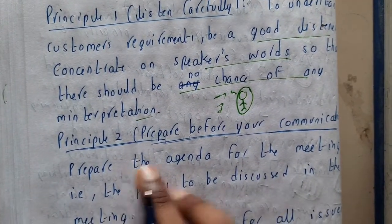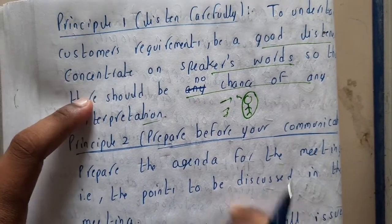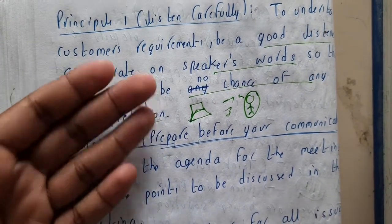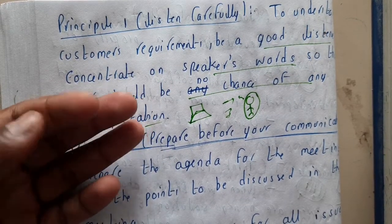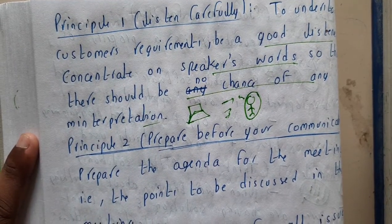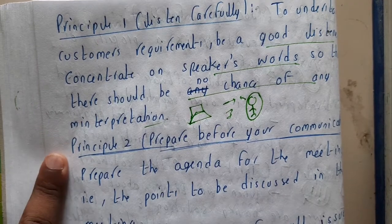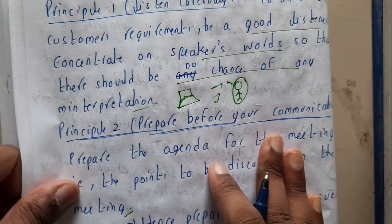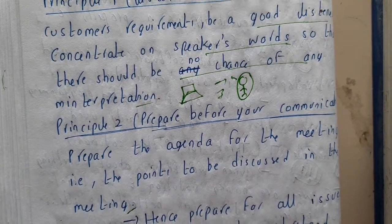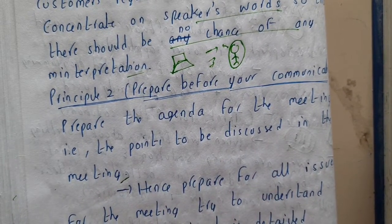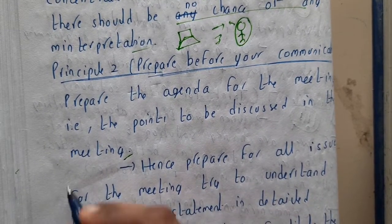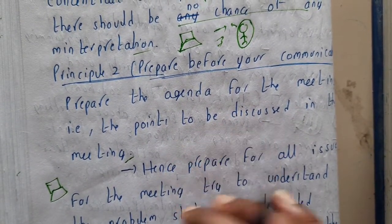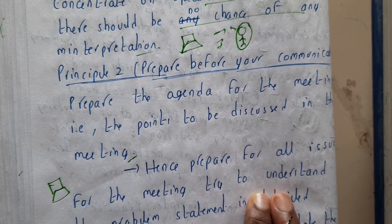Principle two is to prepare before you communicate. Whenever you go for a requirement analysis or communication phase, make an agenda first — list what questions you are going to ask and what requirements you need to clarify. Prepare the agenda for the meeting, covering all points to be discussed, including requirements, budget, and any gaps. If you don't clear your doubts there, it could lead to miscommunication and the whole process could collapse.